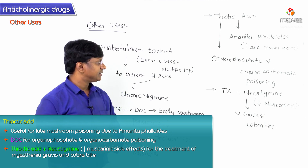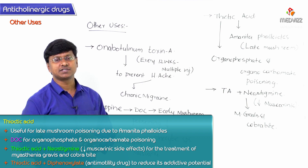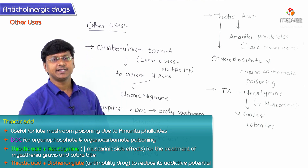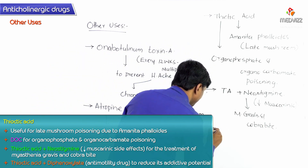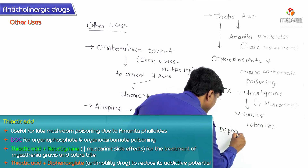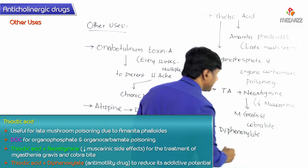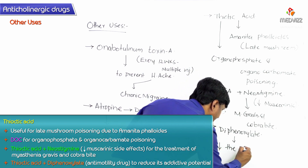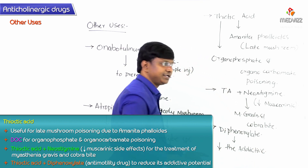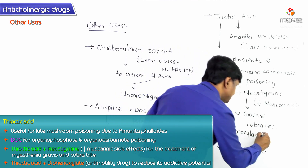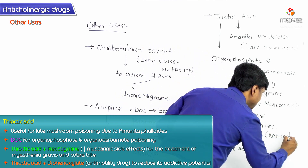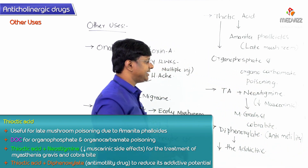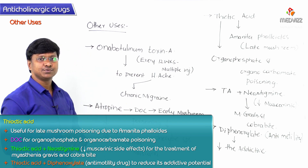Thiotic acid is also added to diphenoxylate to reduce its addictive potential. Diphenoxylate is used as an anti-motility drug, and thiotic acid is added along with it mainly to reduce the addictive potential caused by diphenoxylate.